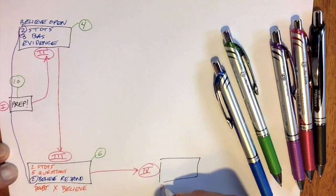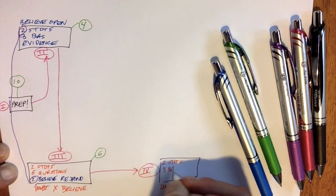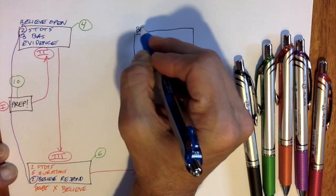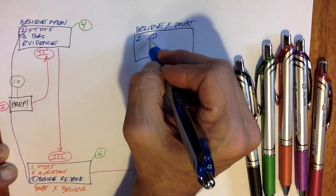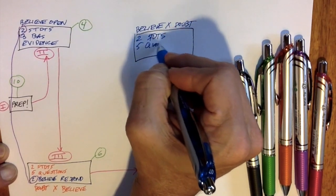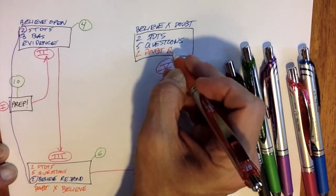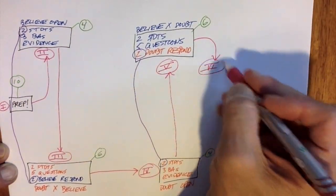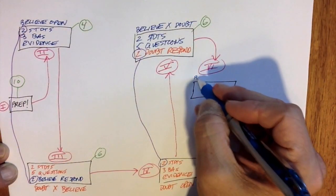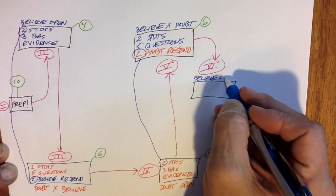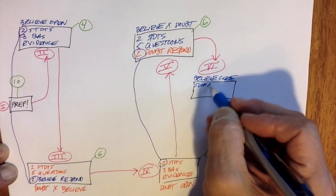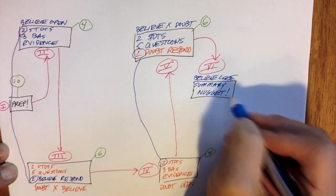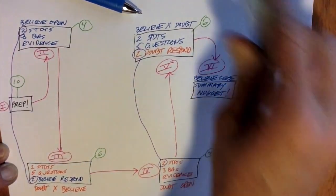Phase four is the doubt side opening — again, two students, three broad arguments, evidence, four minutes. Phase five is the believe side cross-examining the doubt side: two students prepare five questions during prep time and spend six minutes cross-examining two other doubt-side students, not the two who opened. Phase six is one person from the believe side closing the debate by summarizing their side's strongest arguments, highlighting the other side's weakest arguments, and closing with a spicy nugget, a quotation, or something new — usually around two minutes.